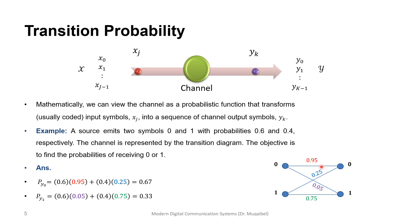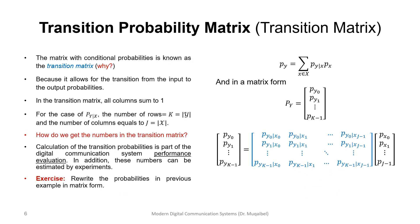This is now called transition probability, and it's one way of representing discrete memoryless channels. What about transition probabilities? We can write the transition probabilities into a form of matrix, which is called transition matrix. The matrix with conditional probabilities is known as a transition matrix because it allows for transition from the input to the output probabilities.